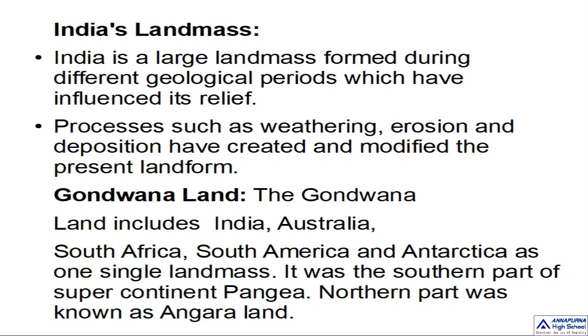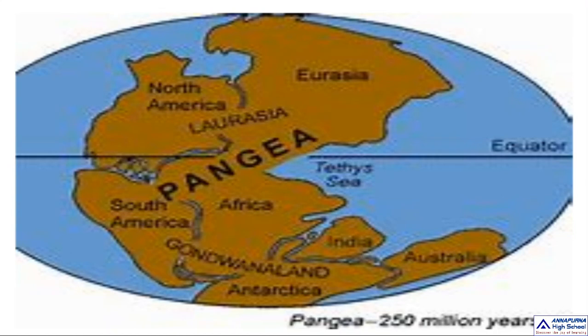Now let me tell you about the formation of major landforms in Indian landmasses. During the Mesozoic era, that is 225 to 70 million years ago — very, very old, long, long ago — there was a sea called Tethys Sea.